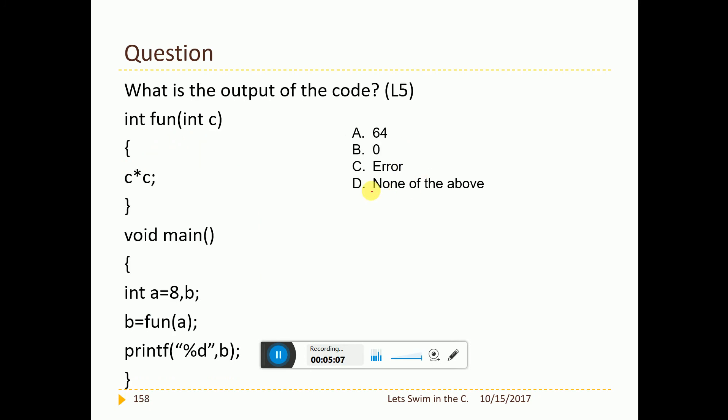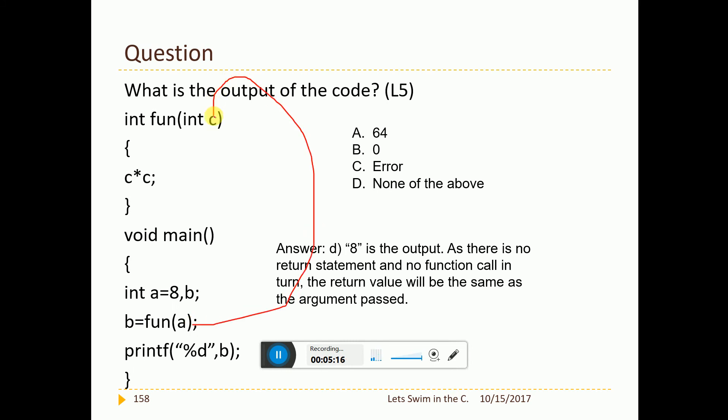Now next question. This is again a simplest question. Int a equal to 8 comma b. b equal to fun of a. So you go here. This is copied here. And 8 into 8 will come here. But what do you return? And most importantly, here there is no return statement. So whatever has happened will not be written here. Hence, the previous question whichever we have seen without any content inside is matching here. So whatever I pass will come back as an answer. So 8 is the answer.